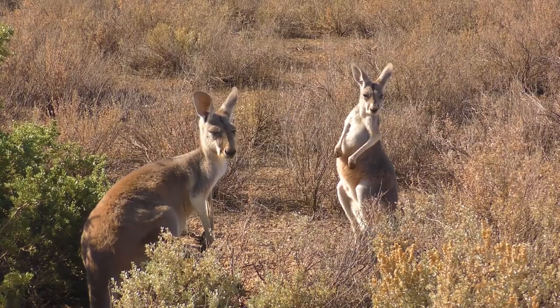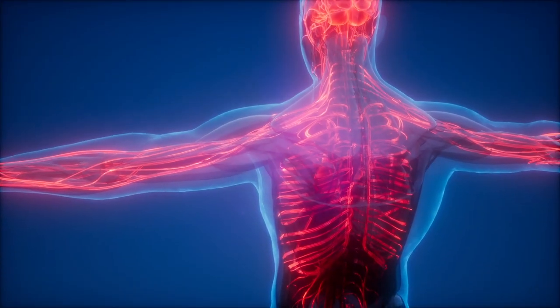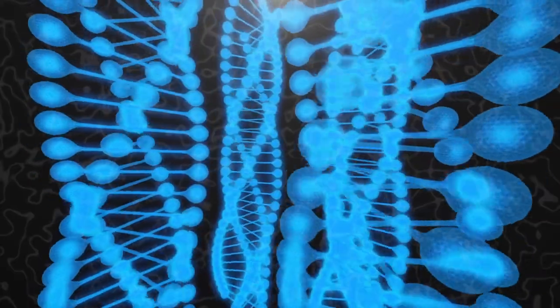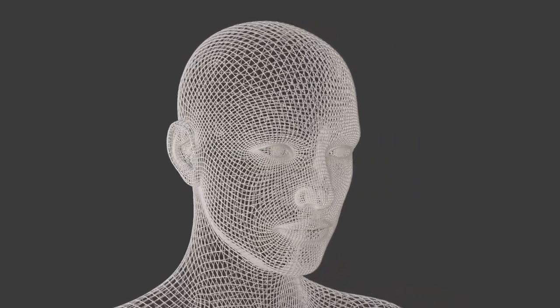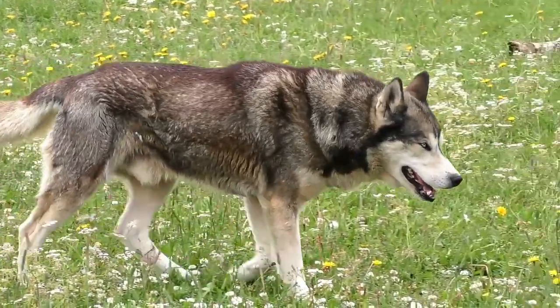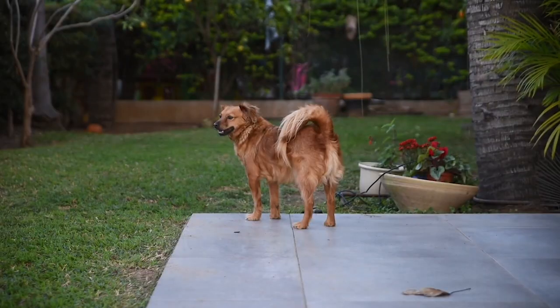Kangaroos can't walk backwards. About 70% of an adult's body is water. Your nose and ears continue growing for your entire life.